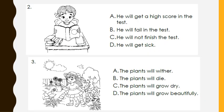Number two. As you can see, the boy is studying. What will happen next? A. He will get a high score in the test. B. He will fail in the test. C. He will not finish the test. D. He will get sick. Very good. He will get a high score in the test.